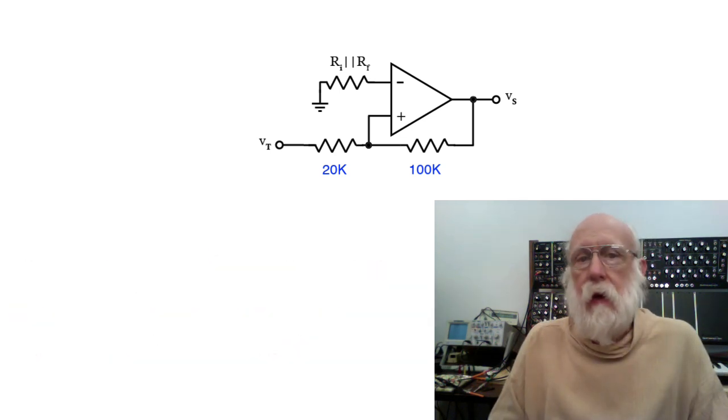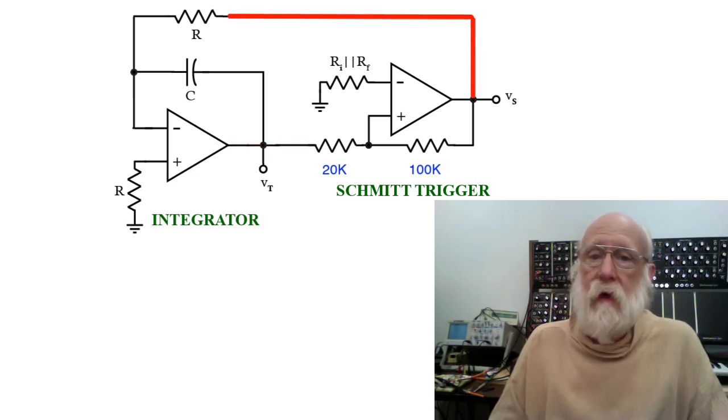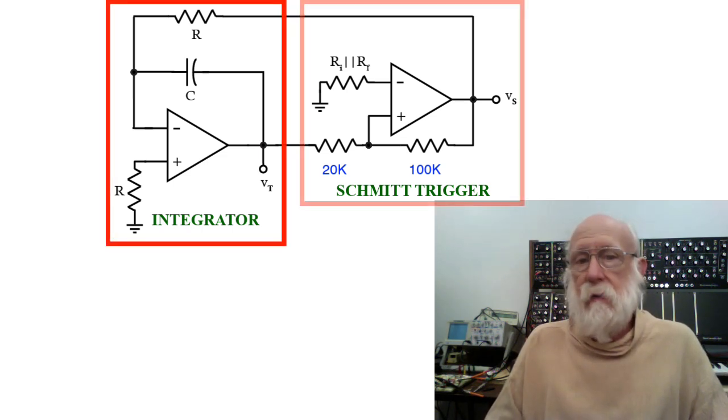Let's now add our integrator back in, and we're simply going to connect the output of the integrator to the input of the Schmidt trigger, and then we're going to wrap the output of the Schmidt trigger back to the input of the integrator. So now we've got an overall feedback loop in the entire circuit. We've basically got two components: an integrator and a Schmidt trigger.